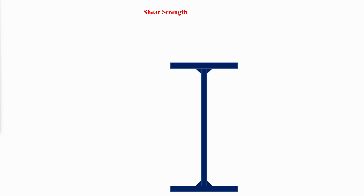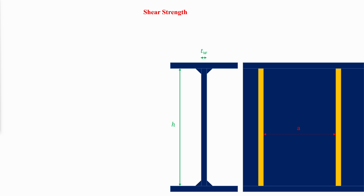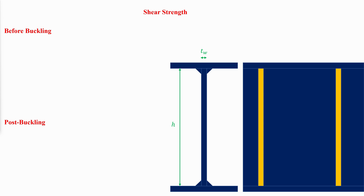The shear strength of a plate girder is a function of the depth-to-thickness ratio of the web and the spacing of any intermediate stiffeners that may be present. The shear capacity has two components: the shear strength before buckling and the post-buckling strength. The post-buckling strength relies on tension field action, which is made possible by the presence of intermediate stiffeners. If stiffeners are not present or are spaced too far apart, tension field action will not be possible and the shear capacity will consist only of the strength before buckling. AISC section G2.1 covers the case where there is no tension field action. In this case, the strength before buckling is 0.6 times the yield strength multiplied by the area of the web times the constant C sub V1, which depends on the depth-to-thickness ratio of the web.